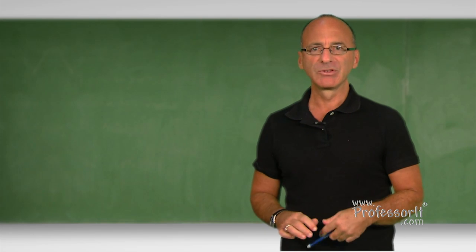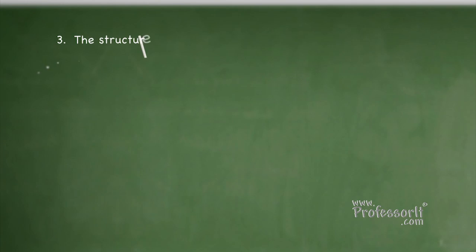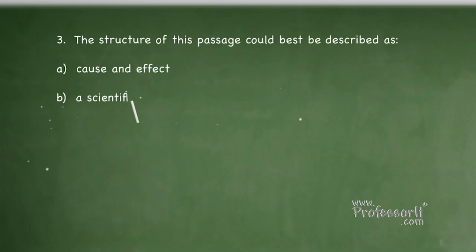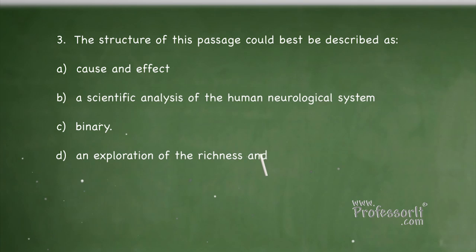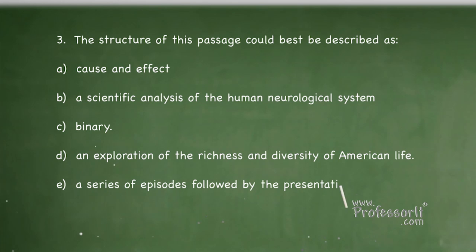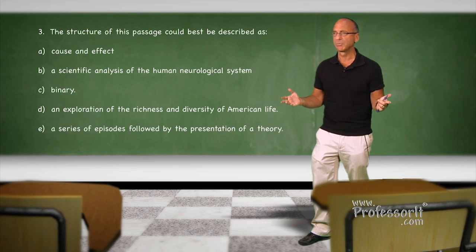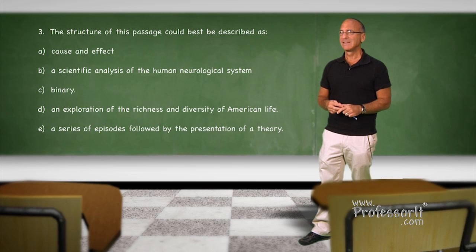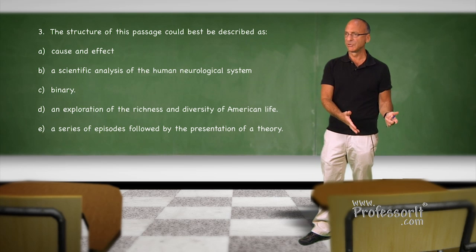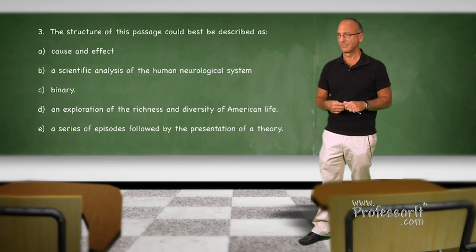Now let's turn to the third question about the short passage. The structure of this passage could best be described as A, cause and effect. B, scientific analysis of the human neurological system. C, binary. D, an exploration of the richness and diversity of American life. Or E, a series of episodes followed by the presentation of a theory. Structure. Some of you are asking, what is structure? Unless you're in AP English classes, you probably have no idea what that is. In simple terms, it's the form in which the material has been shaped. The bottle the wine has been poured into. Hint. It's not the wine. So how do we find it? We look at the outlines, the contours of the piece.